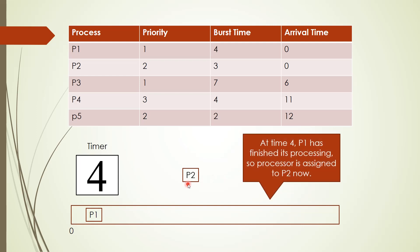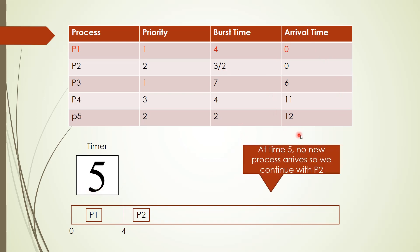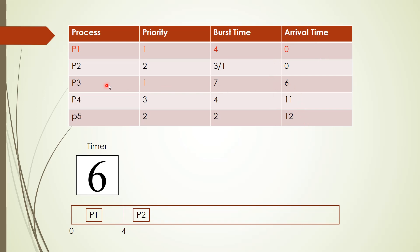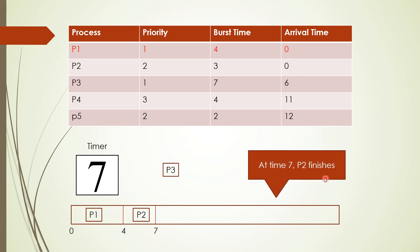Now P2 will be assigned to the CPU. P2 will run for 1 clock cycle; its initial burst time was 3, so it runs from clock cycle 4 to 5, needing 2 more clock cycles. In clock cycle 6, a new process P3 arrives, but P3 will not disturb P2 as this is non-preemptive priority scheduling. P3 waits for P2 to complete, and P2 finishes at clock cycle 7.